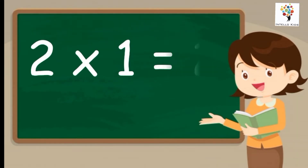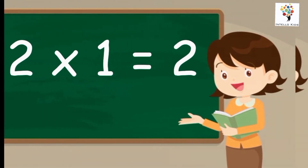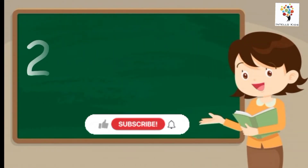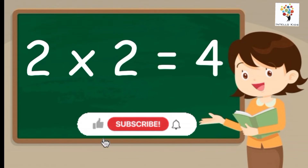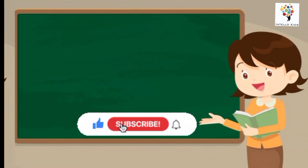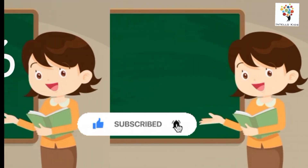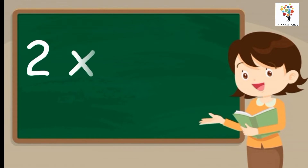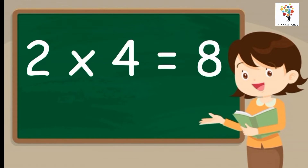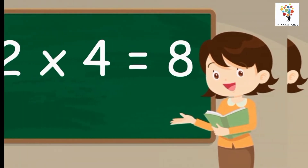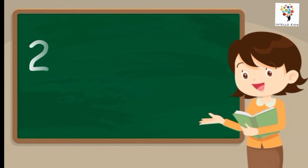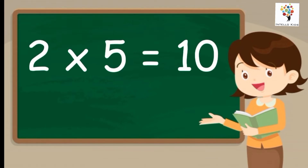Two ones are two. Two twos are four. Two threes are six. Two fours are eight. Two fives are ten.